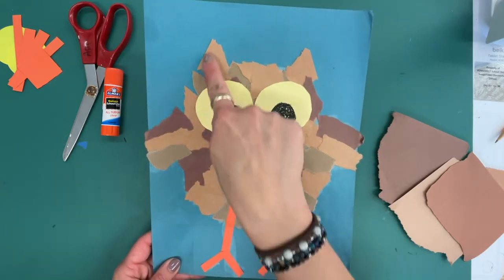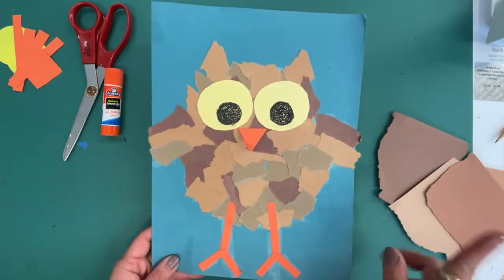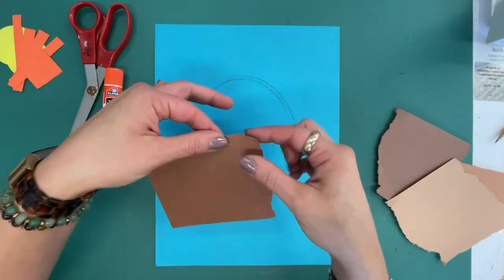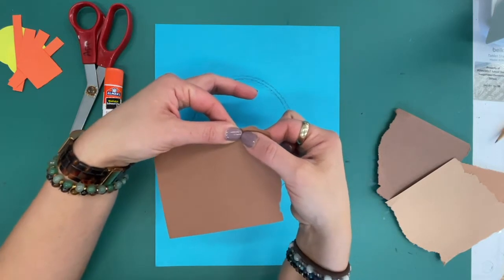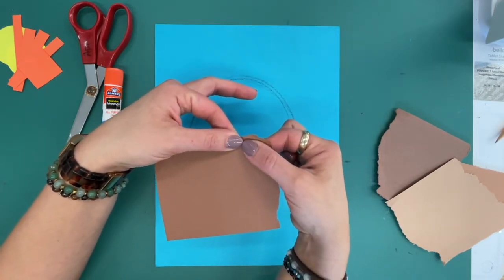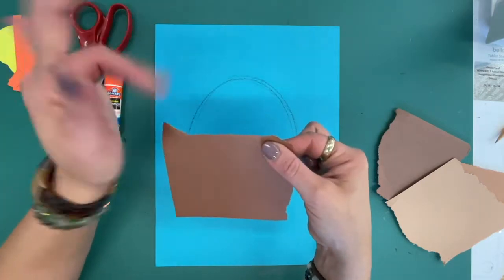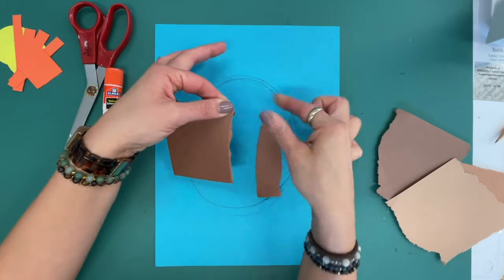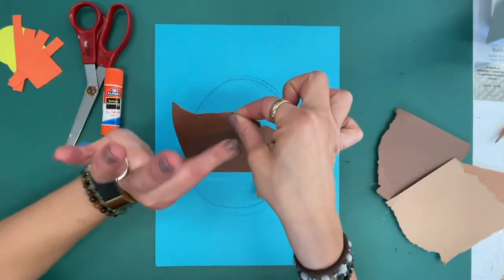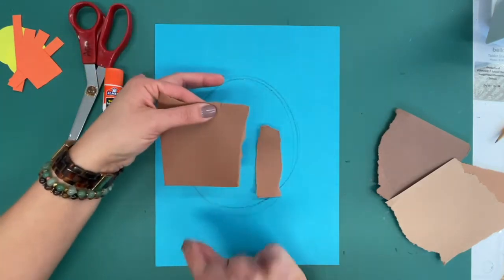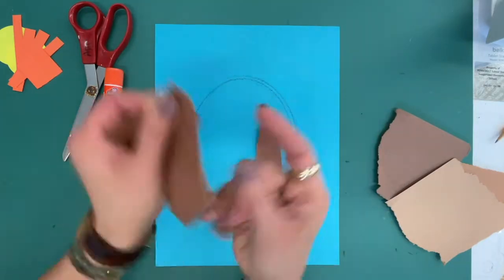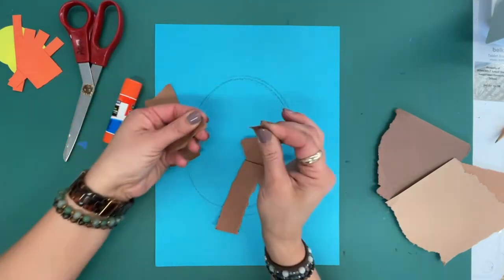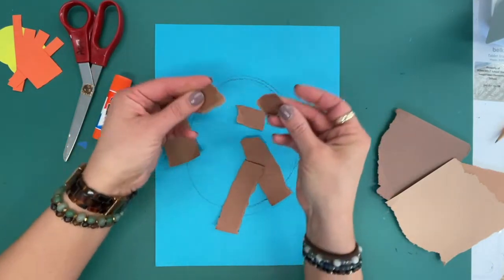All right, so if you look at our owl example here is our oval and then we have a couple points for ears and wings. Let's start by tearing paper. Raise your hand if you have torn paper before. Okay most of us have so it's pretty easy you just pinch, pinch and separate. Pinch and I'm pulling this hand this way, I'm pulling this hand this way.